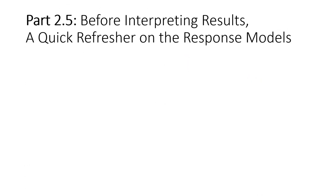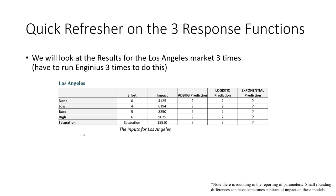Let's do a quick refresher on the three different response model forms we can select from, illustrated using one specific geographic market: Los Angeles. The effort and impact values come directly from the tables seen previously — different levels of salespeople as input and estimated sales dollars in hundreds of thousands as impact. I ran the simulation three different times and will place those results here so you can see them.